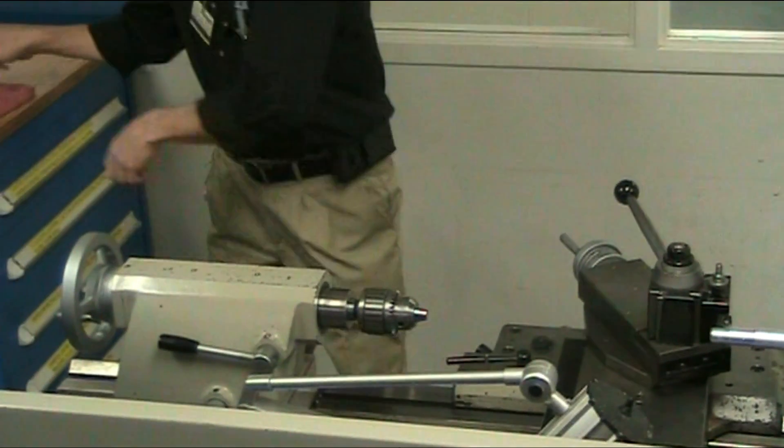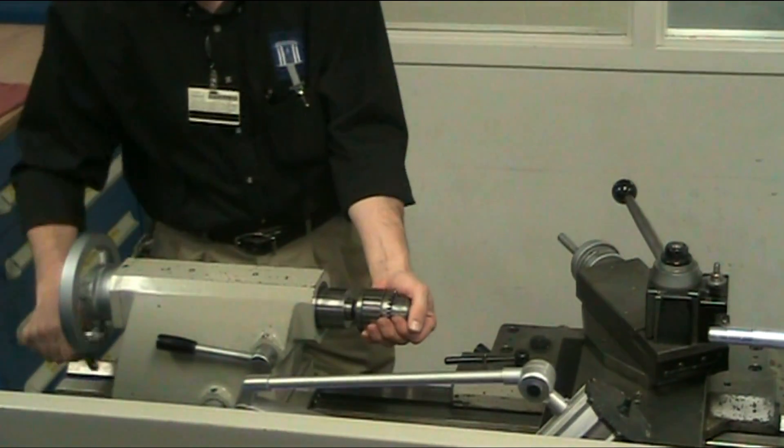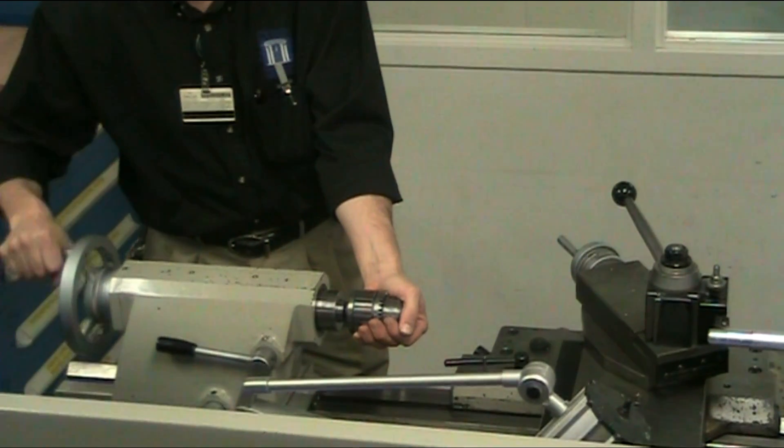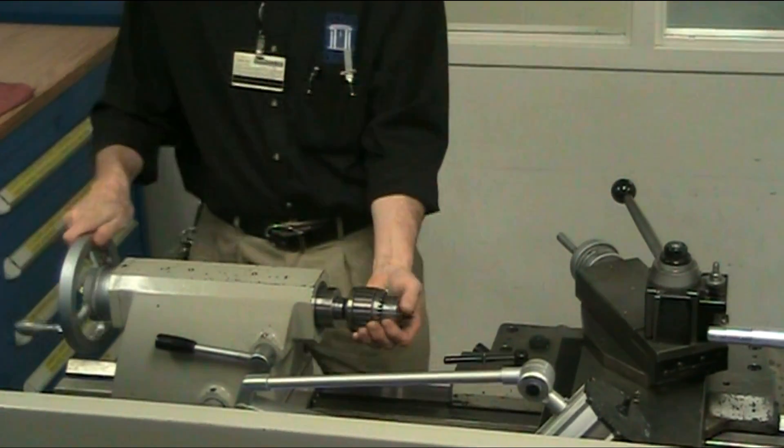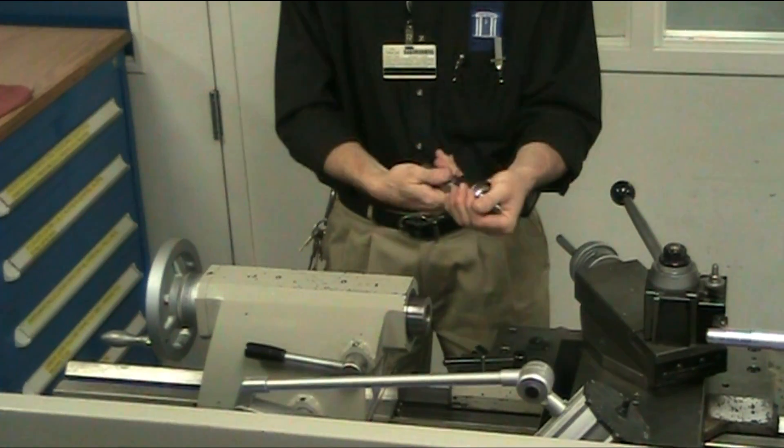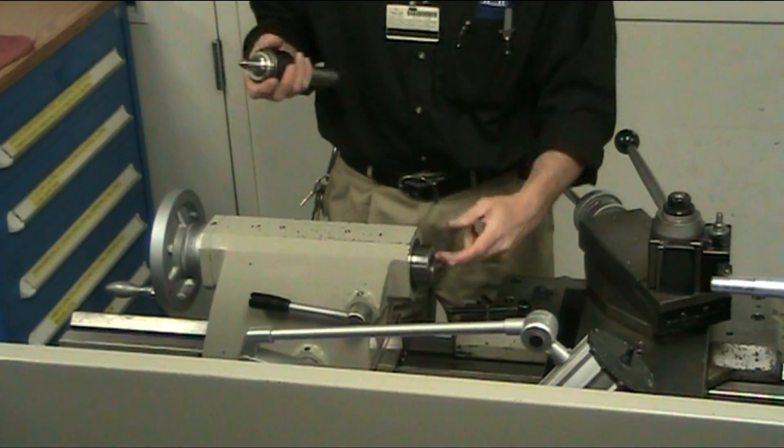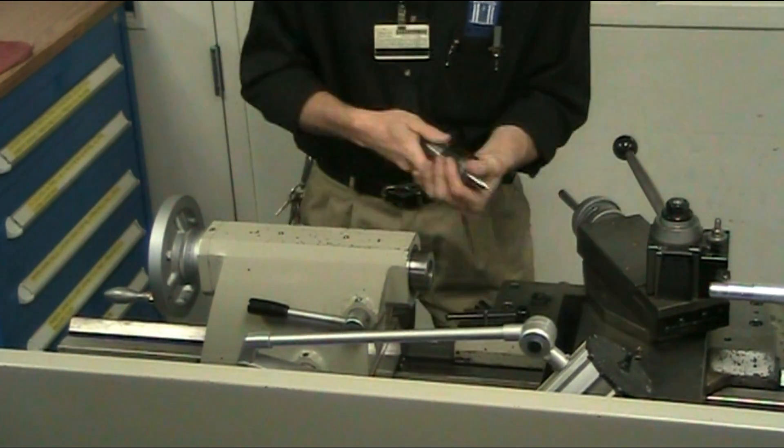The second use is a live center. You take this drill chuck out—you basically turn this counterclockwise until it hits resistance and pop it a little bit, and it comes right out of the tail stock. You always want to make sure that the spindle is clean and the shank on your center or your chuck is clean, so when they mate up together you pop it in there.